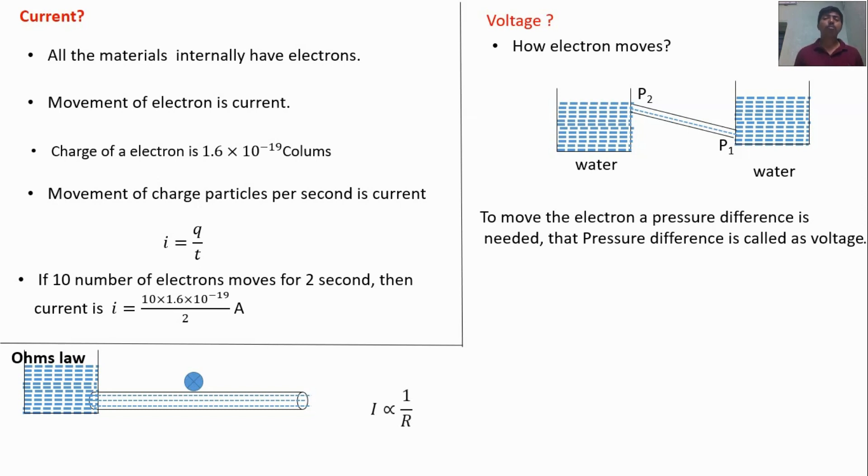So I and R is inversely proportional. If the resistance is high, there is no water molecule movement, there is no current flow. If the resistance is less, maximum current flow. This is a relation between current and resistance.